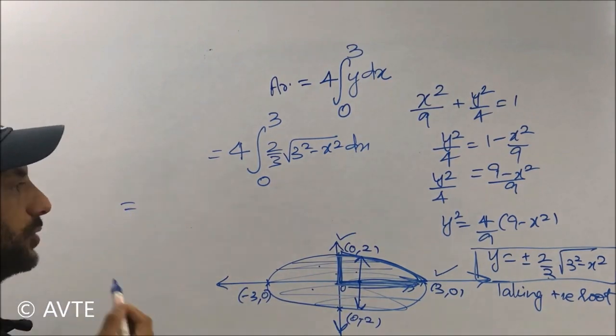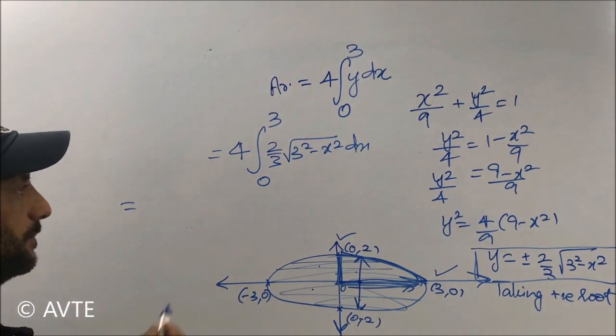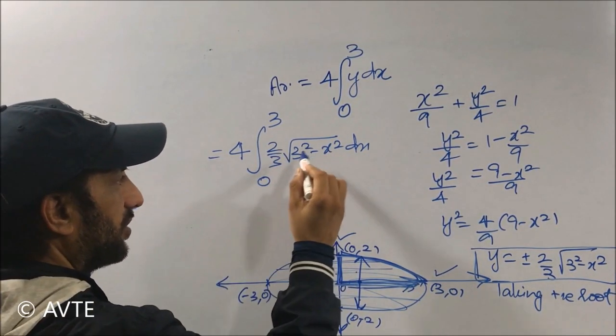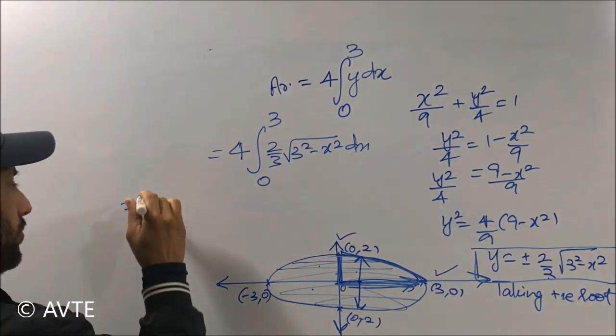Now we have to apply this special integration, special integration of under root of a square minus x square, which you all know.